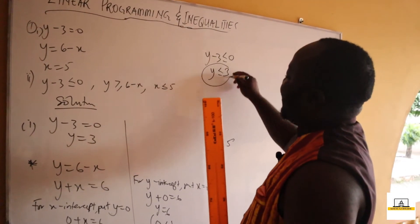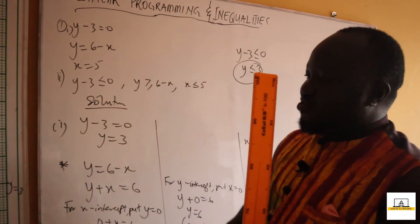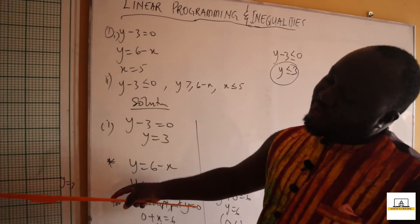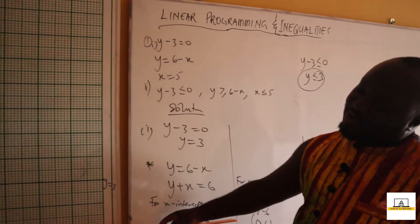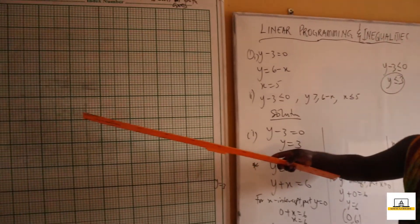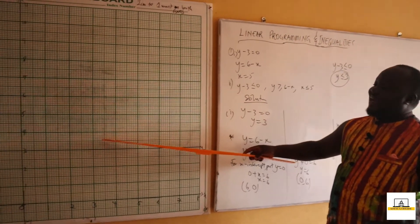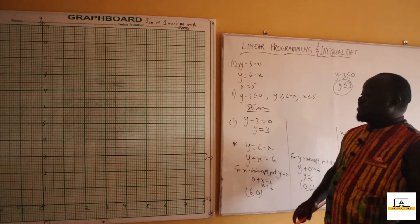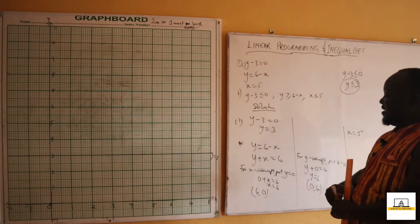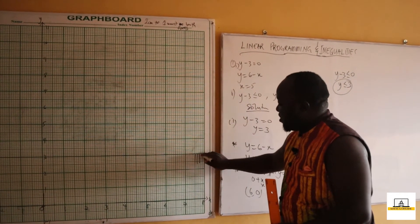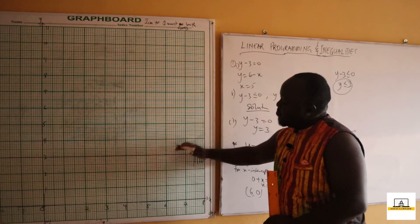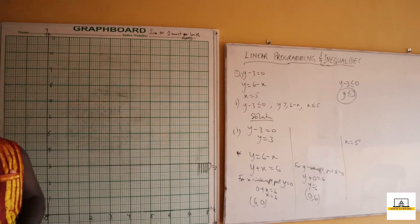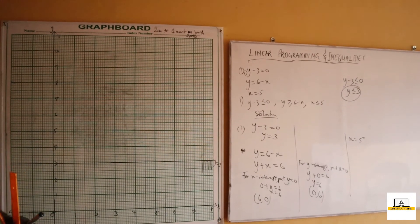Since y is less than or equal to 3, and we have the line y equals 3, numbers less than 3 are below the line — 2, 1, 0 — while 4, 5, 6, 7, 8 are greater than 3. So our solution region lies below the line y equals 3, and we indicate the shading going downward.